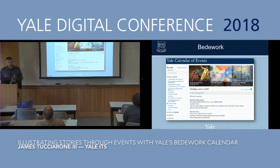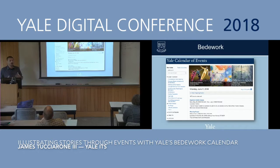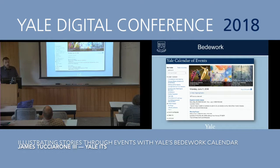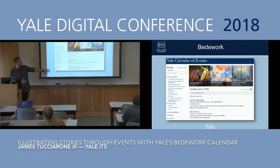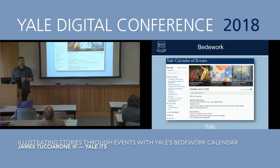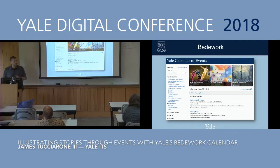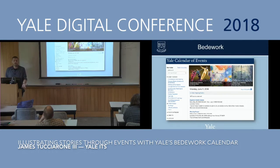We also have the ability to filter by event category — things like arts and sciences, humanities, or law. There's also 'open to,' which is your intended audience, such as the Yale community, the general public, or a specific age group. And then 'listed by' is where we have the powerful ability to identify a specific group that owns the event, so people know it's your group, even within this global aggregated calendar.